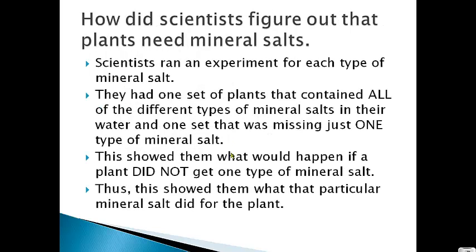So how did scientists figure out that plants need mineral salts? Well, scientists run experiments. They'll take several different sets of plants and pull one of the types of minerals away from one group of plants, then give the other group all the minerals. So they have two groups: Group A and Group B.